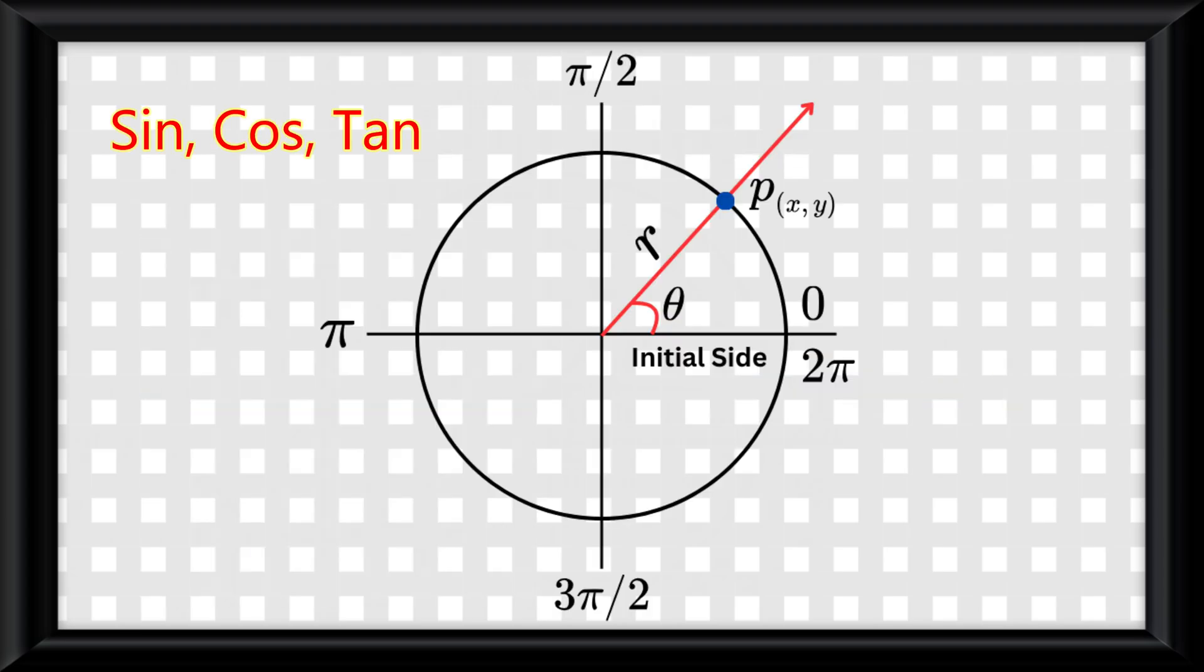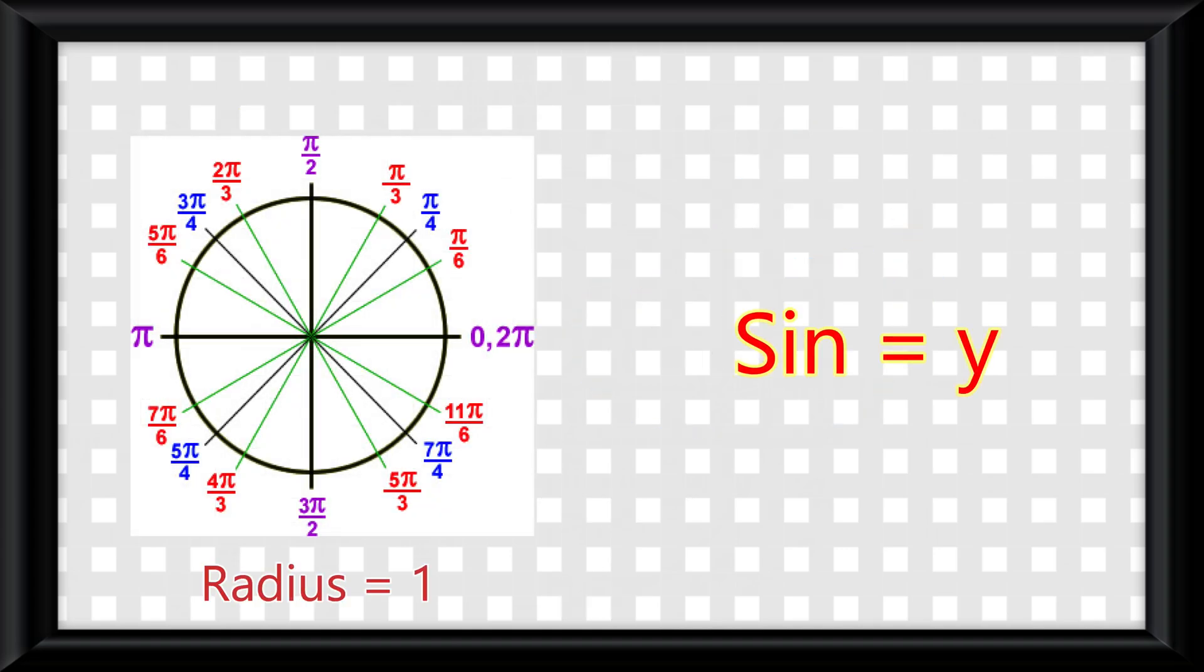Now if we introduce sine, cosine, and tangent, we see they also function differently on the circle. Sine deals with a vertical displacement, which is y divided by the radius r. In the unit circle, the radius is 1, making sine the y coordinate.